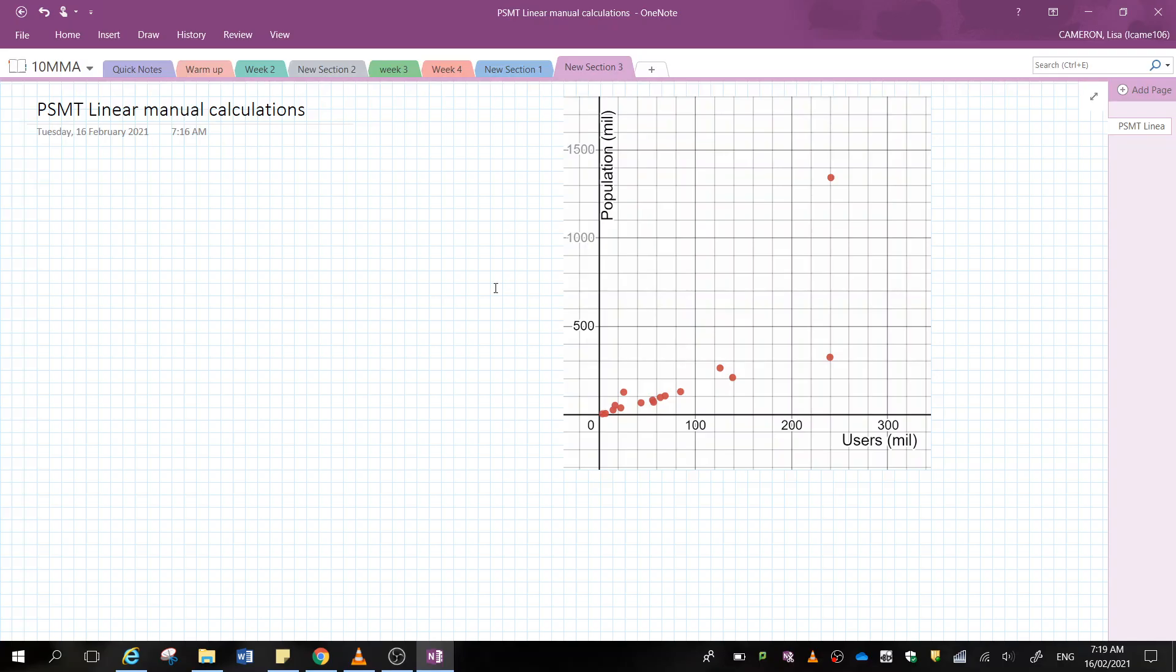In this video, we're going to go through how to calculate your manual line of best fit from your graph. So I've just taken this picture from Desmos. You could choose to print your picture out if you would prefer, or you could do it on your Word document.